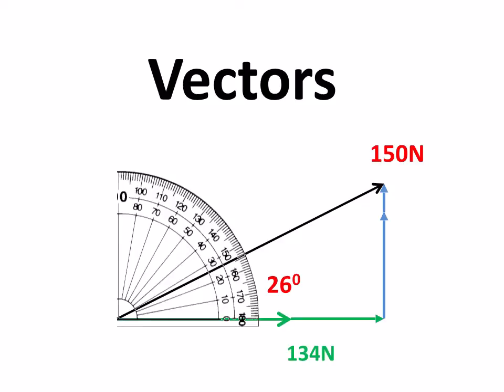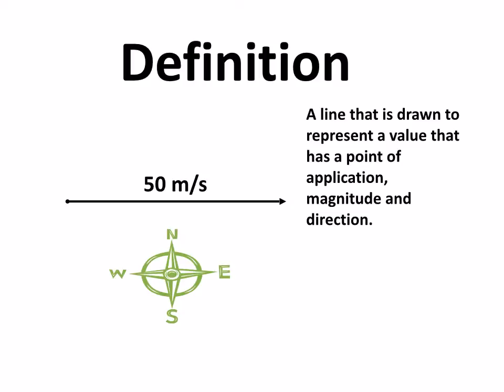This first video in the AC Theory unit looks at vectors. A vector is any line that's drawn that represents a value that has a point of application, that we see here, a magnitude, so in this case 50 meters per second, and a direction. And this one is heading in an easterly direction, so this would represent velocity.